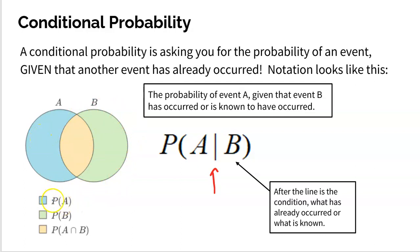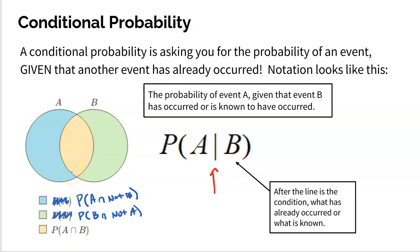More specifically, the blue part would be the probability of A and not B. The green part is the probability of B and not A. And the overlap — the yellow part — is the probability of A and B. So the entire circle for A represents all of A: some of which is A and not B, and some of which is A and B. That's why the entire circle A represents all of A.